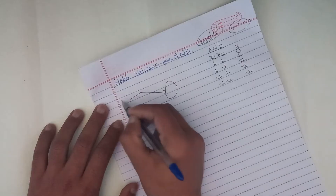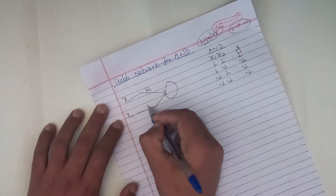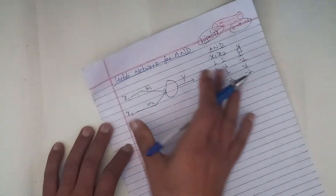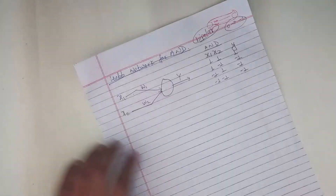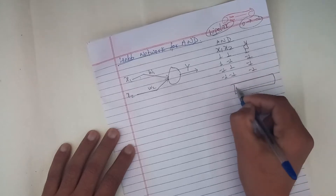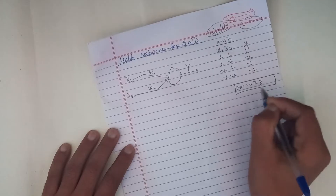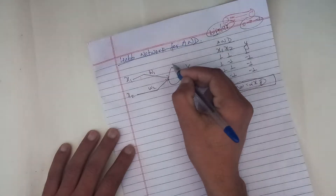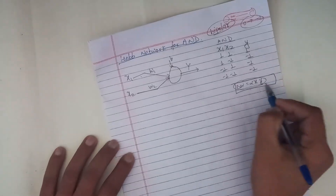This is x1 and this is w1, and this is x2 and this is w2, and it will give you y. This is the EV-network — a simple EV-network. You know the synaptic weight, and the learning formula is alpha times x into y. Here is the bias value. This is the diagram, this is the formula.